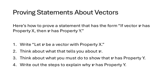The theorem also illustrates a general proof structure we'll use a lot in this course: proving properties about vectors. For now, we'll focus on properties of the form: if vector v has property X, then v has property Y. The proof structure is: start by saying 'let v be a vector with property X,' then use definitions to understand what that property tells us about v, determine what we need to demonstrate to show v has property Y, and then write out those steps.